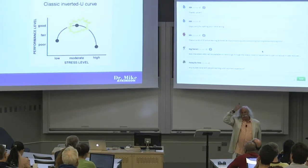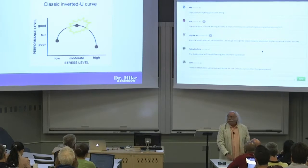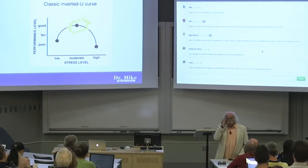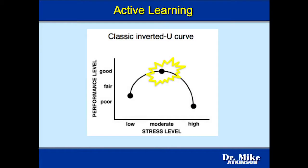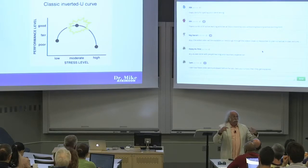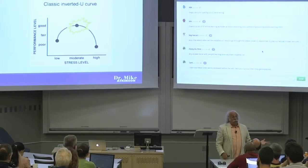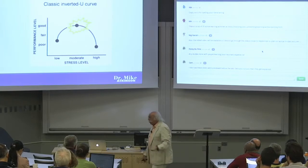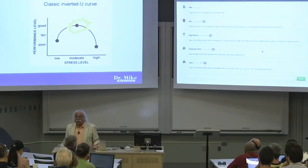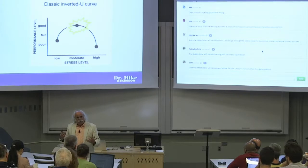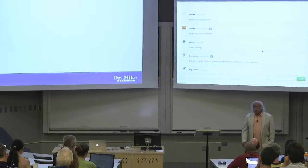Many people have seen this before — the classic inverted U between level of stress and performance. Basically, if you have a moderate level of stress, you're going to perform better. This applies to sports, to anything you do, it applies to learning. You need that moderate level of stress in there. So we've got to find a way to engage students and get moderate stress levels. How can I induce moderate activation? There's a bunch of ways that people talk about doing this.